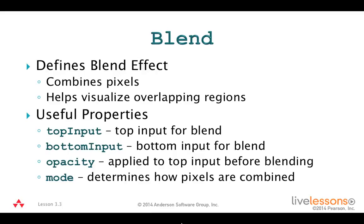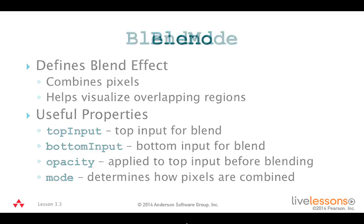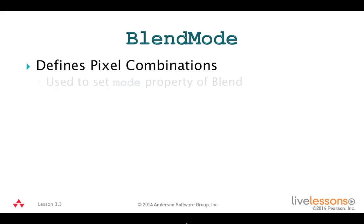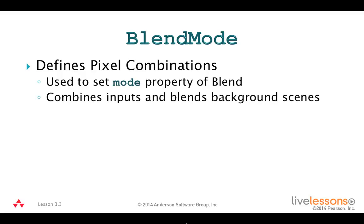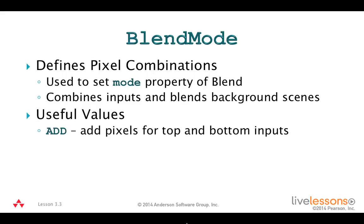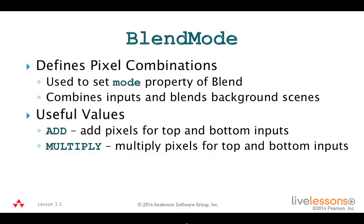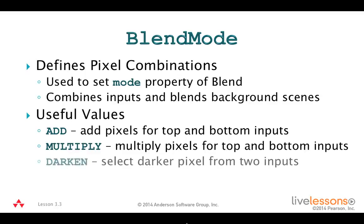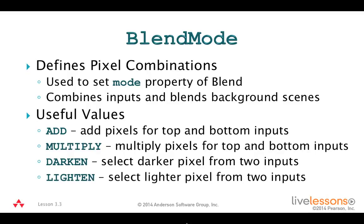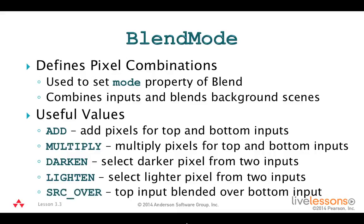The Mode property requires a BlendMode type with enums that specify the actual blending. BlendMode defines pixel combinations that you can use to set the Mode property of a blend effect. You can define how the inputs are combined together and how a node is blended into the background. BlendMode.Add adds the color and alpha component pixels. BlendMode.Multiply multiplies the color component pixels. BlendMode.Darken selects the darker component pixels, and BlendMode.Lighten selects the lighter component pixels. BlendMode.SourceOver blends the top input over the bottom input and is the default mode.